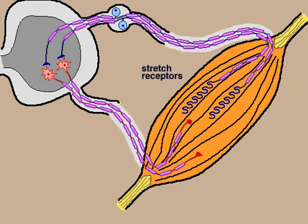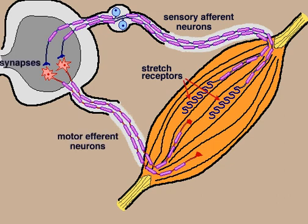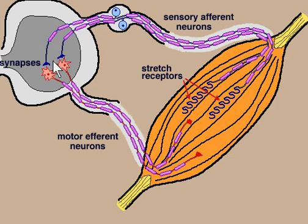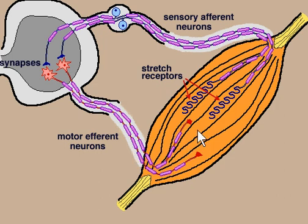If we look a little further on, we can see these stretch receptors here. These are the sensory afferent neurons — you can see these stretch receptors are going to sense and transfer that signal through to the spine. There are these synapses, or little junctions, here, and that's going to cause an automatic response coming out of the motor efferent neurons. So this side is the sensory side — it's going to sense the stretch.